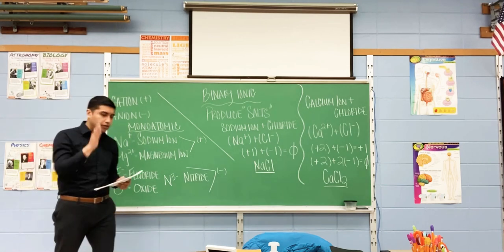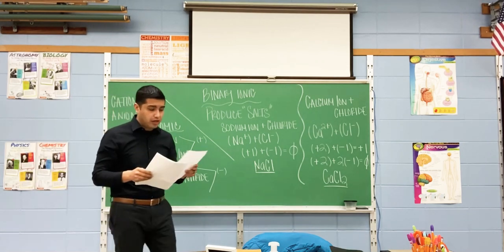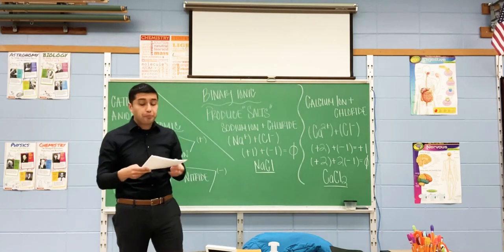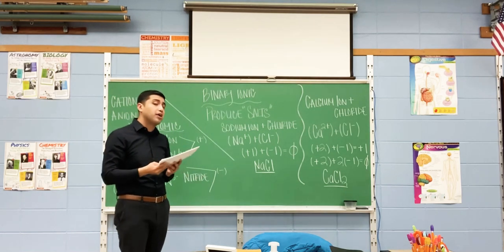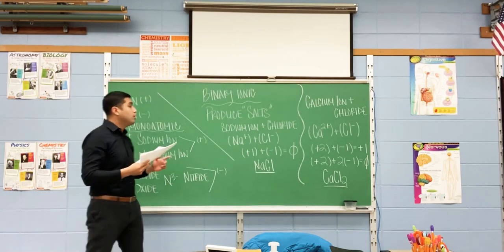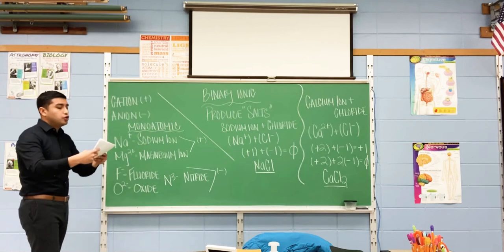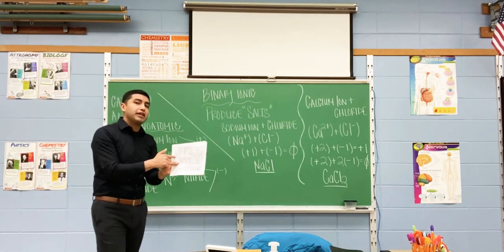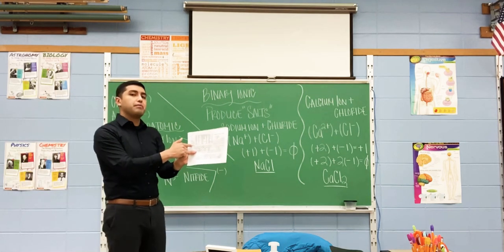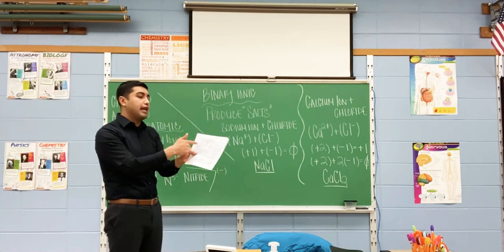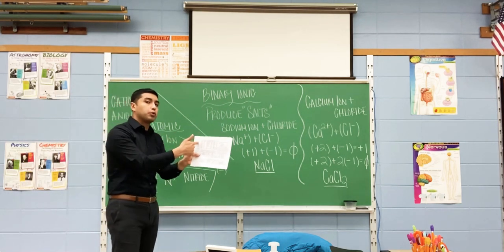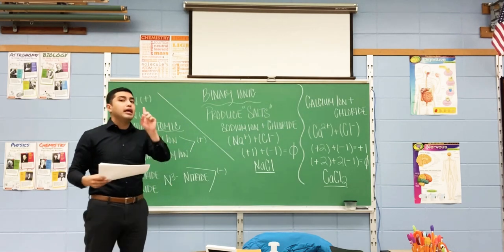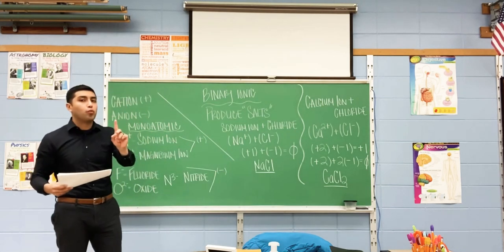Take out your periodic table and locate sodium. Sodium is element number 11, and it's in row number one. Look at the top — it has a one at the top. It's in row number one.